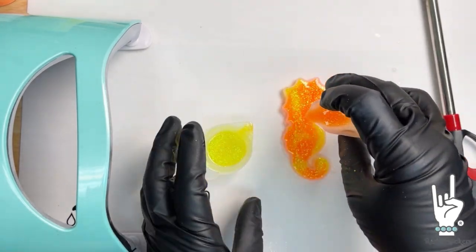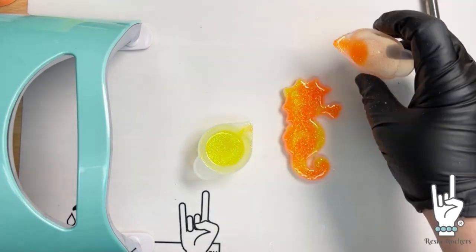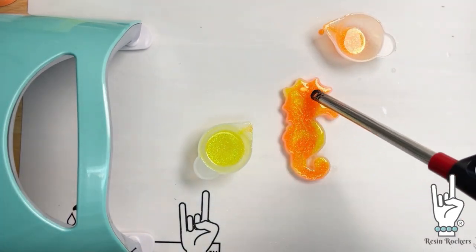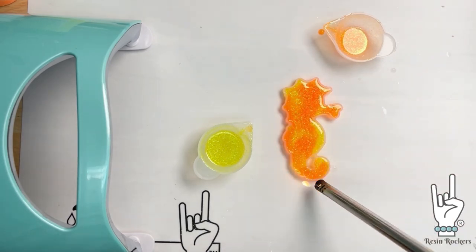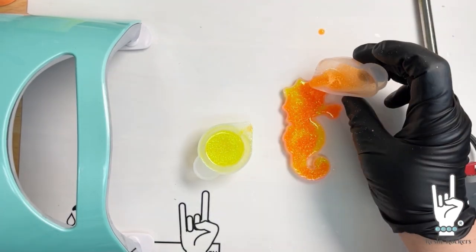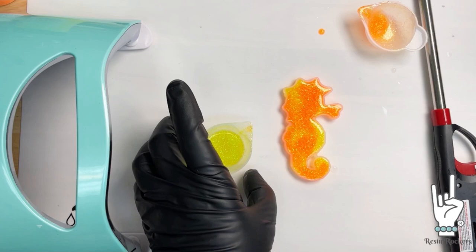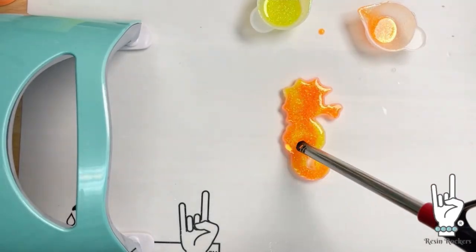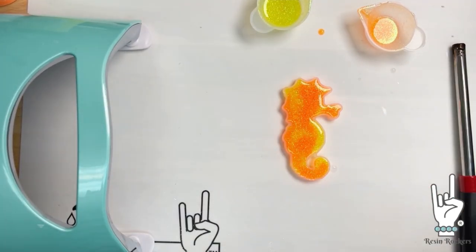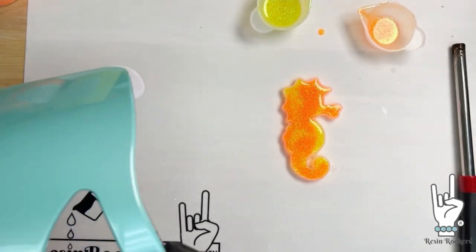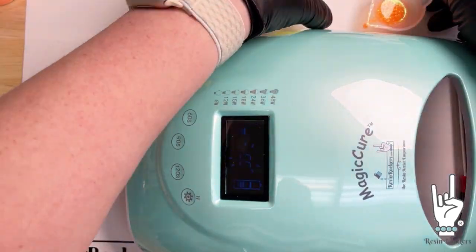But whatever you pour on top doesn't really matter because no one's going to see that. So just keep taking turns with each color going all the way down the mold. And then once you have the colors in where you want them, fill it in with the rest of the resin. Run a lighter over the top to get rid of any surface bubbles. And then we're going to move in with our magic cure lamp.